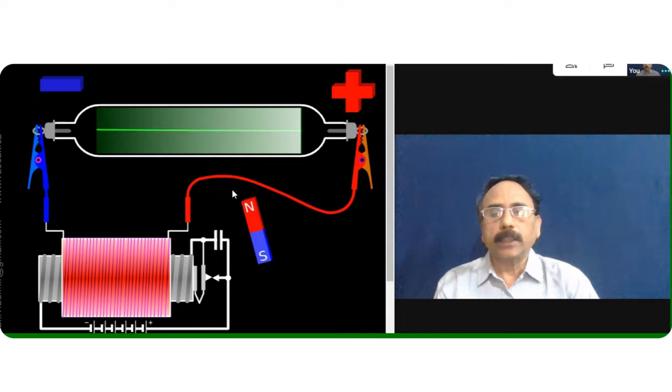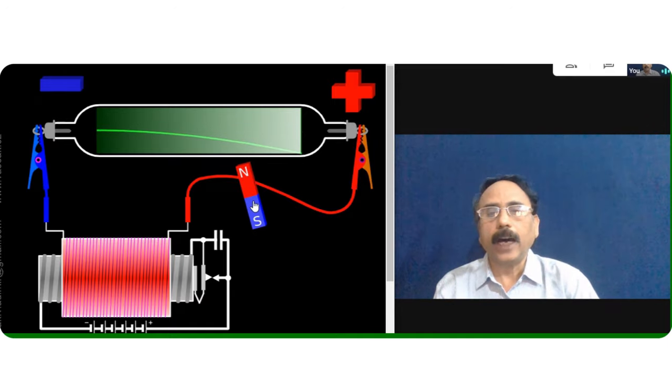Now let us watch. When I keep the north pole, then you will see the bending of the cathode rays in downward direction.